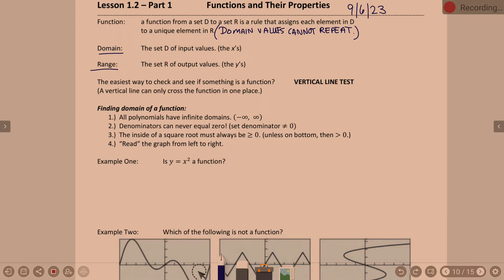Domain, the set of all input values, or in other words, it is our x values. Range, the set of all output values, or in other words, the y's. That's old news.